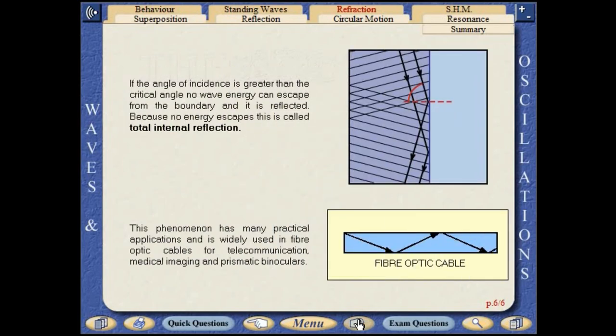If the angle of incidence is greater than the critical angle, no wave energy can escape from the boundary and it is reflected. Because no energy escapes, this is called total internal reflection. This phenomenon has many practical applications and is widely used in fibre-optic cables for telecommunications, medical imaging, and prismatic binoculars.